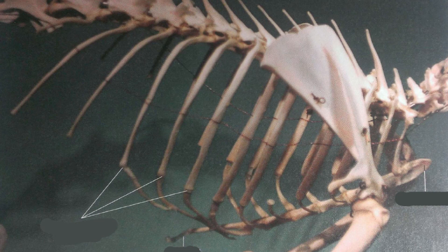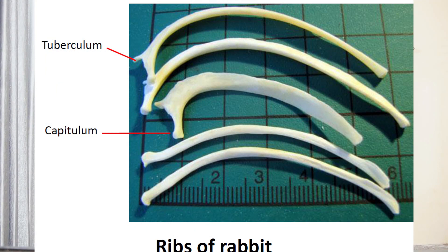The last part of the axial skeleton consists of ribs and sternum, and they constitute the thoracic framework. There are 12 pairs of ribs articulating with the thoracic vertebrae. Each rib has two parts: a shaft and a head. The shaft consists of a dorsal bony portion called the vertebral rib and a ventral cartilaginous part called the costal or sternal rib. The first eight pairs of vertebral ribs are double-headed, each having a dorsal head called the tuberculum and a ventral one called the capitulum. The tuberculum articulates with the tubercular facet of the transverse process and the capitulum with the capitular facet of the centrum.